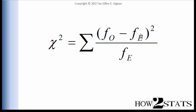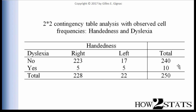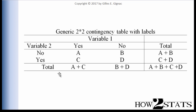It's more complicated to calculate the expected cell frequencies in a 2x2 design because you first have to calculate the marginal cell totals. To show how this works, I've labeled each of the cells with letters: A, B, C, D. We have A plus C, and B plus D as marginal cell frequencies, A plus B, C plus D, and A plus B plus C plus D — that's exactly how we calculate these marginal cell frequencies.